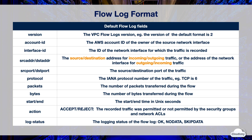The following table describes the available fields for a default flow log record. Version is the version of the VPC flow log format. If you use the default flow log format, the version is 2. When you use a custom format, each custom field has a version number associated with it — the version is the highest version among the specified fields. For example, if you only specify fields from version 2, the version is 2. If you specify a mixture of fields from versions 2, 3, and 4, the version is 4.